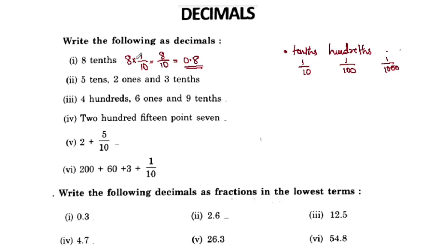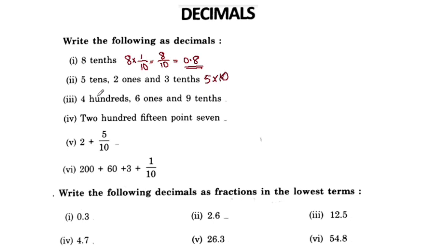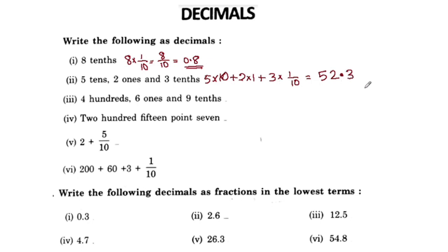We have to write the following as decimals. In this case, 5 tens, 2 ones, and 3 tenths. 5 tens is 5 times 10, which is 50. Plus 2 ones is 52. 3 tenths: 3 into 1 by 10. 3 by 10 is 0.3. So the answer is 52.3.